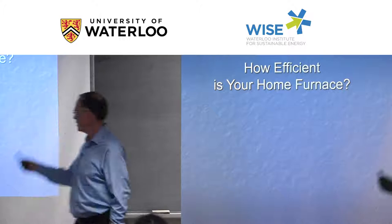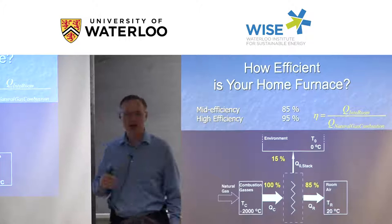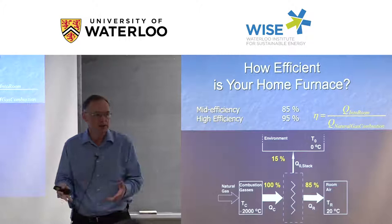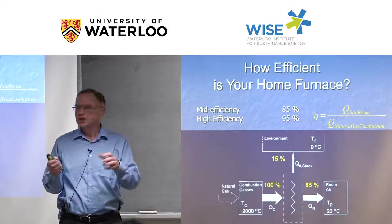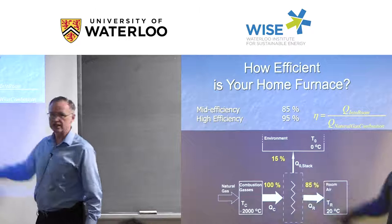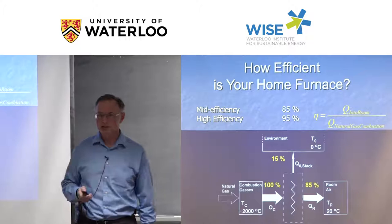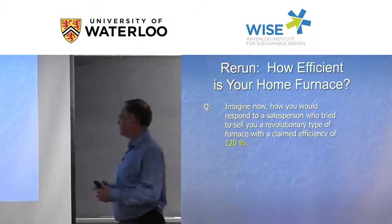The first question: how efficient is your home furnace? A mid-efficiency furnace is about 85% efficient, and a high-efficiency furnace is about 95% — meaning that percentage of heat gets into the house versus the heat produced in the furnace. For a natural gas furnace, the remaining 5% or 15% goes up the stack. The furnace combusts natural gas, uses a heat exchanger to keep room air separate from combustion gases, and heats up the room.